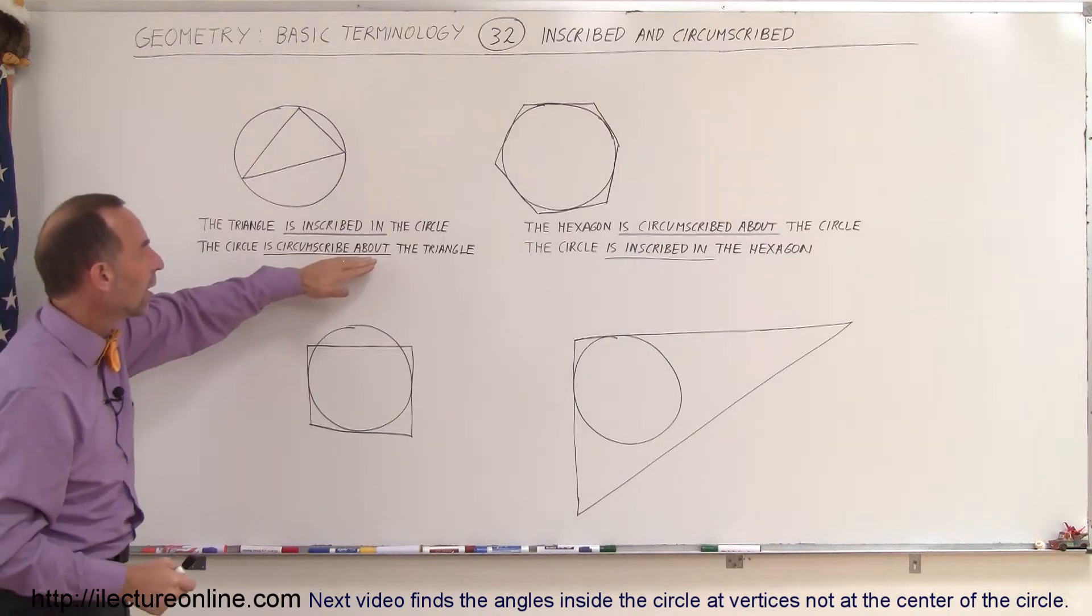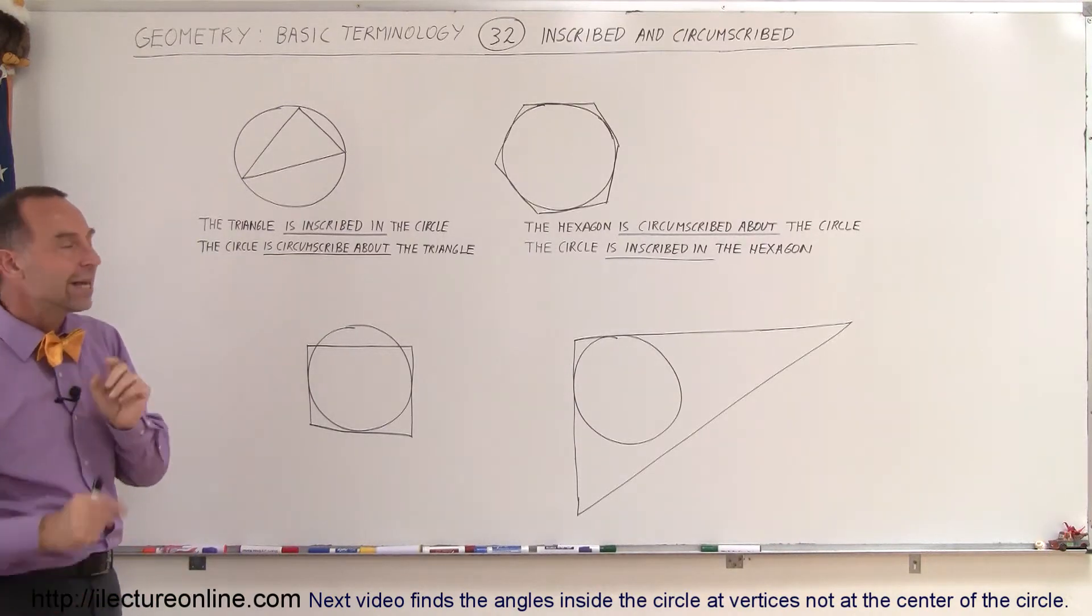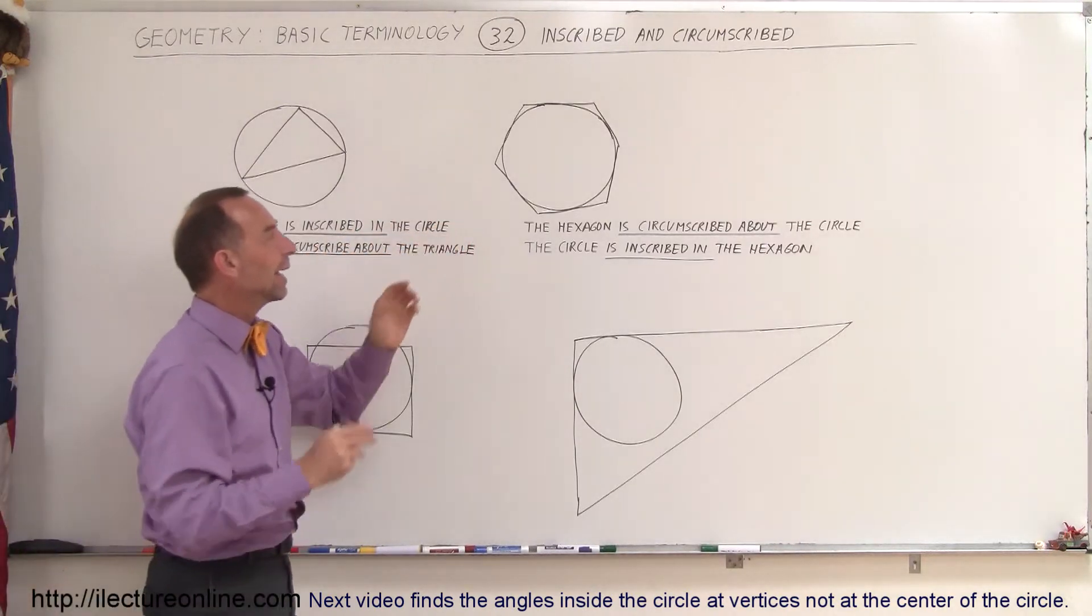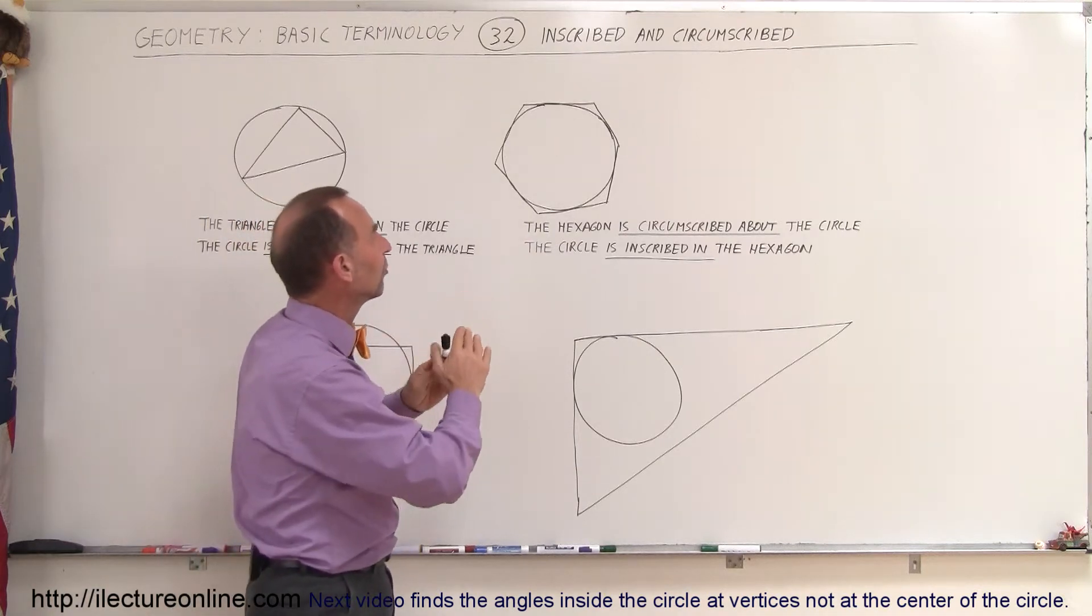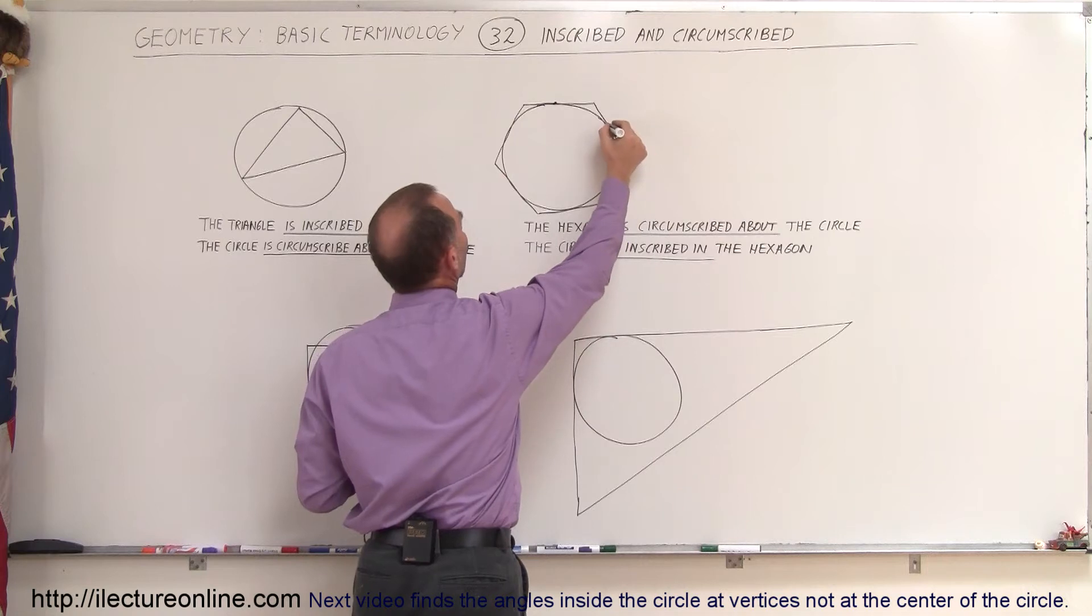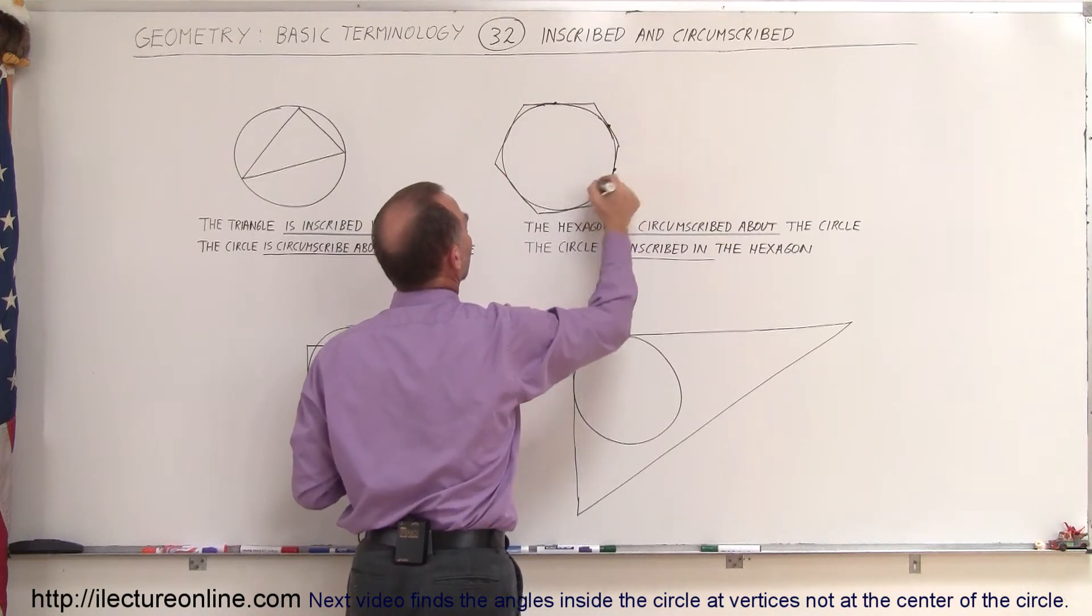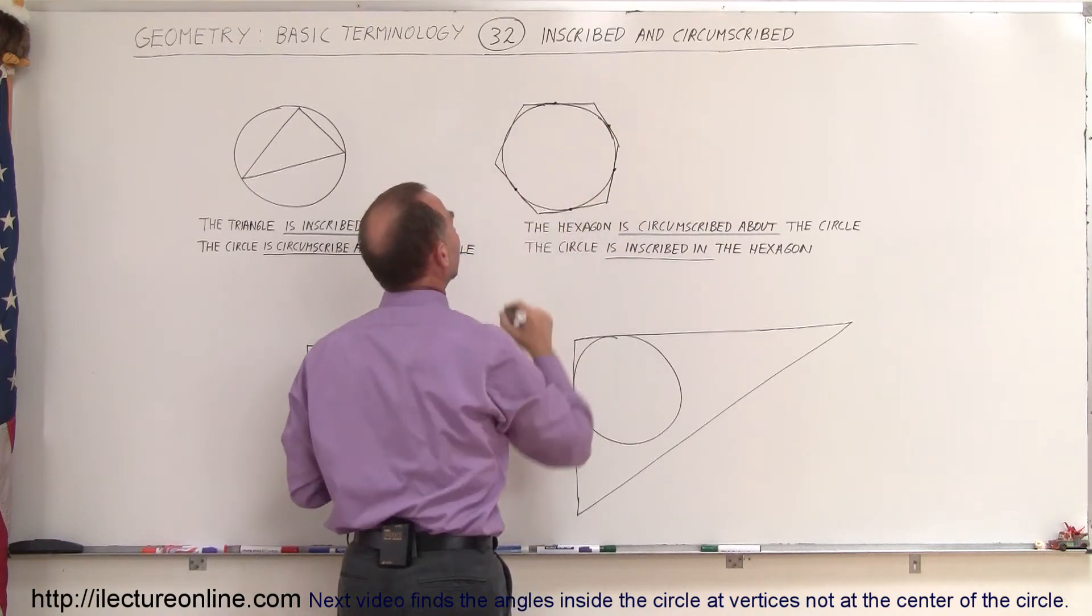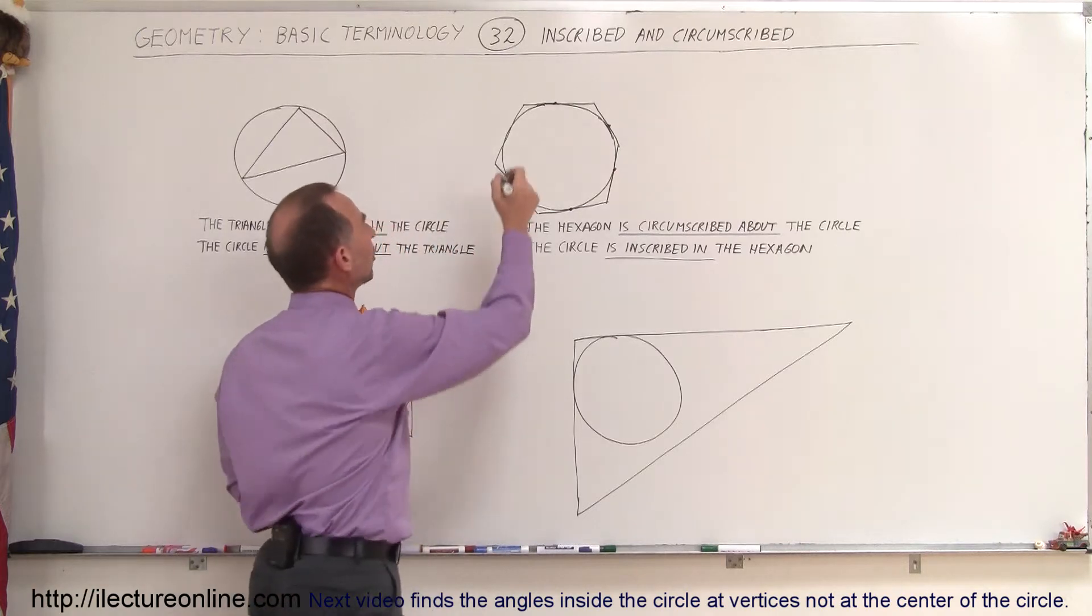Here things are reversed. Here the hexagon is a little bit bigger. And so we can see that the hexagon touches the circle at this location, at this location, over here, over here, and over there. That's all six points. Oh, one more right there.